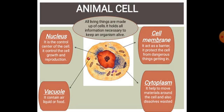The nucleus is the control center of the cell and it controls cell growth and reproduction. The cell membrane acts as a barrier and protects the cell from dangerous things getting in. The vacuole contains air, liquid, or food. The cytoplasm helps to move materials around the cell and also dissolves waste.